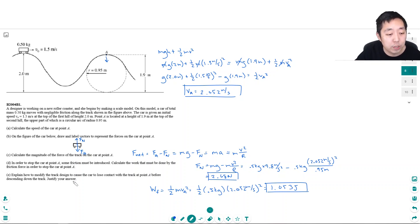Explain how to modify the track design to cause the car to lose contact with the track at point A before descending down the track. If I wanted to lose contact, like if it were to fly off this track, I would lower this ramp because then it would have a larger velocity, and if it had a large enough velocity, then the total gravitational force pulling towards the center wouldn't be enough to keep it on the track.